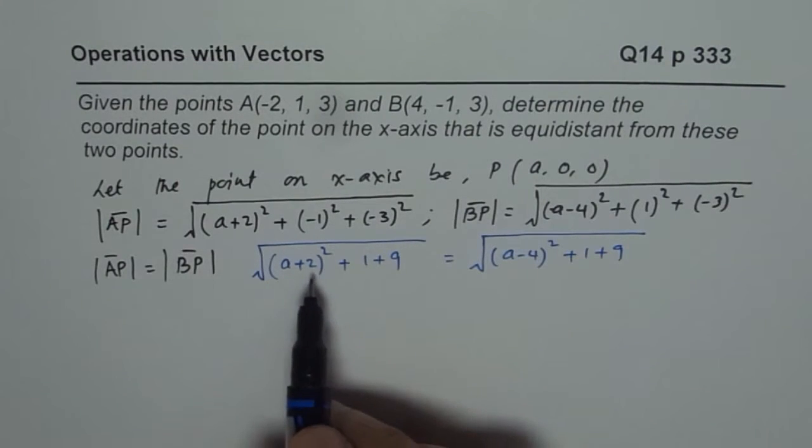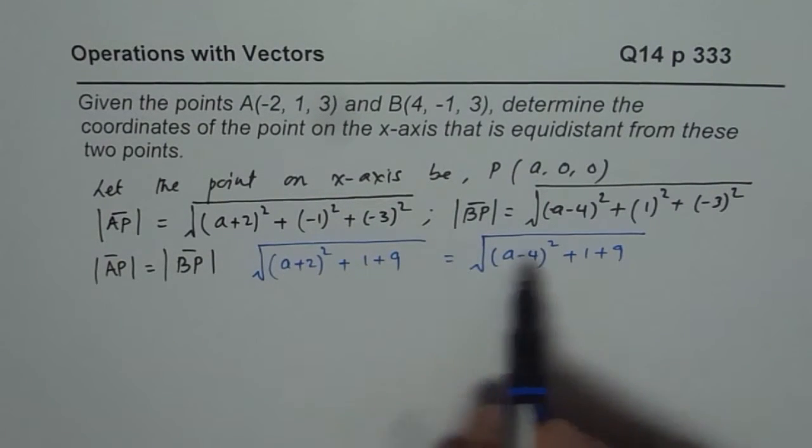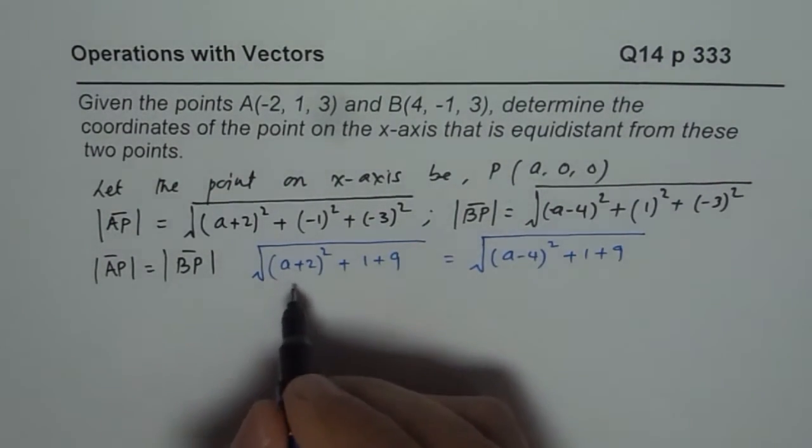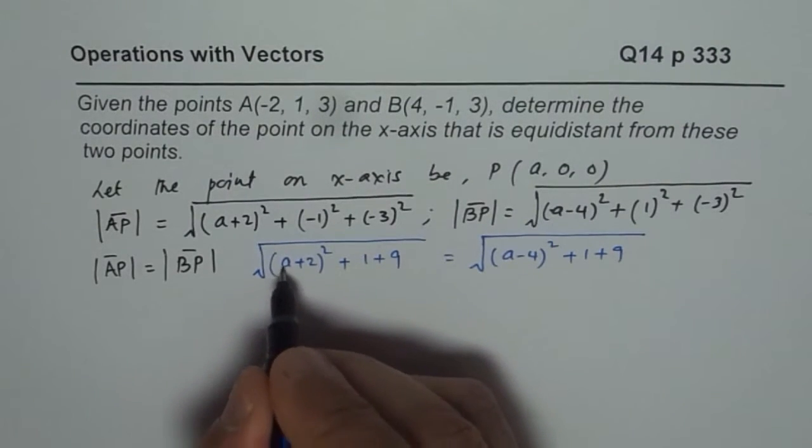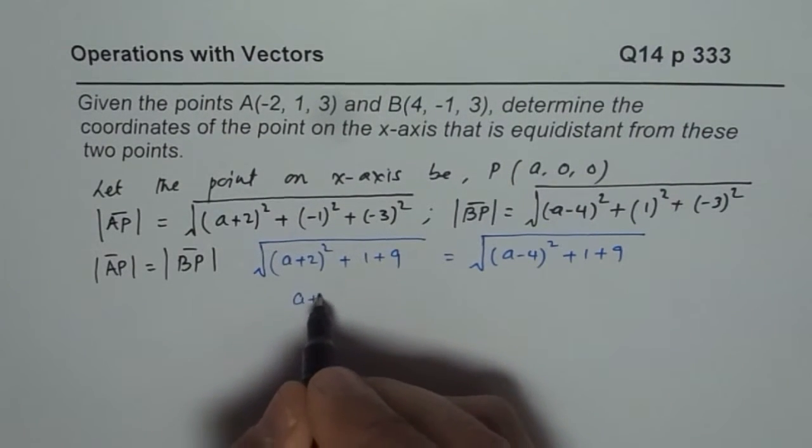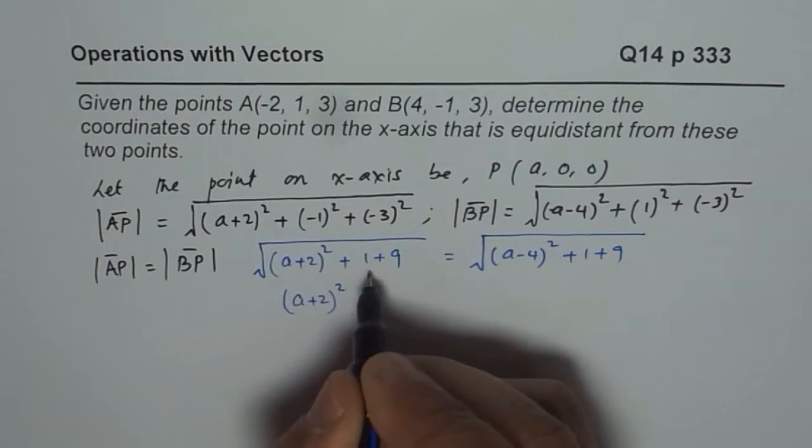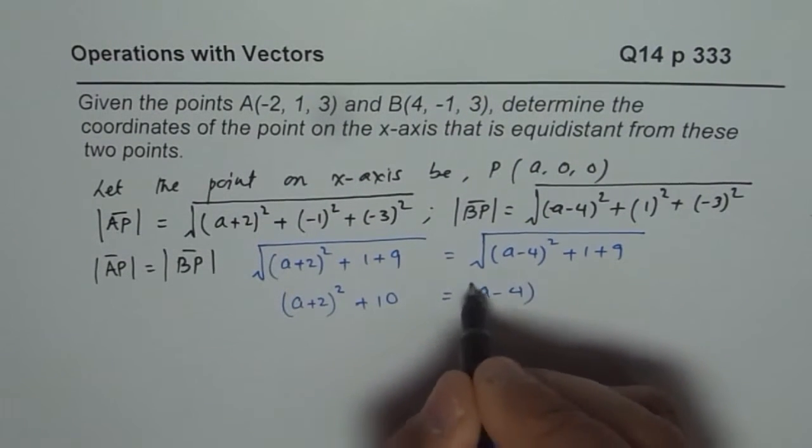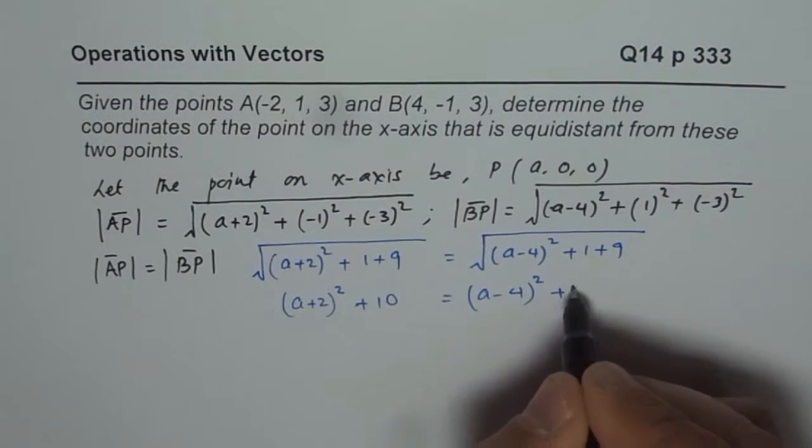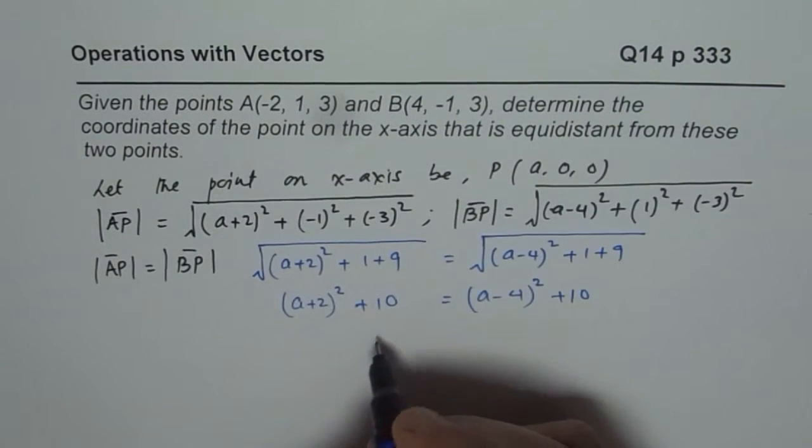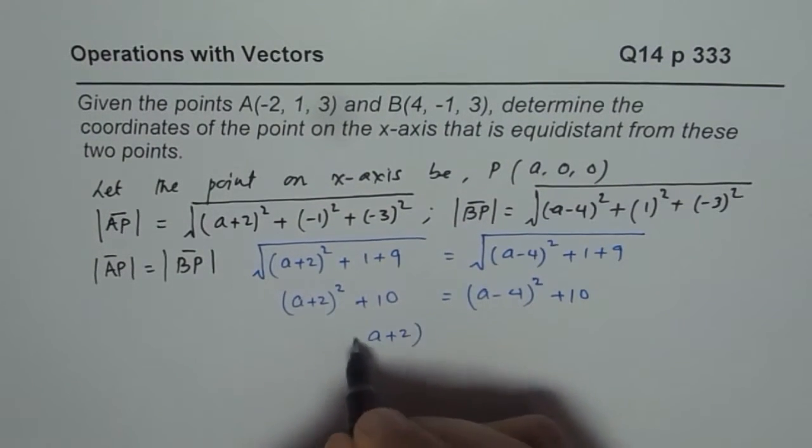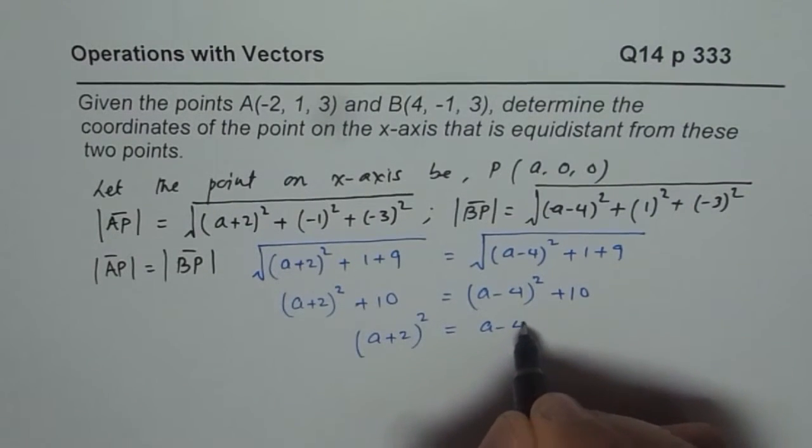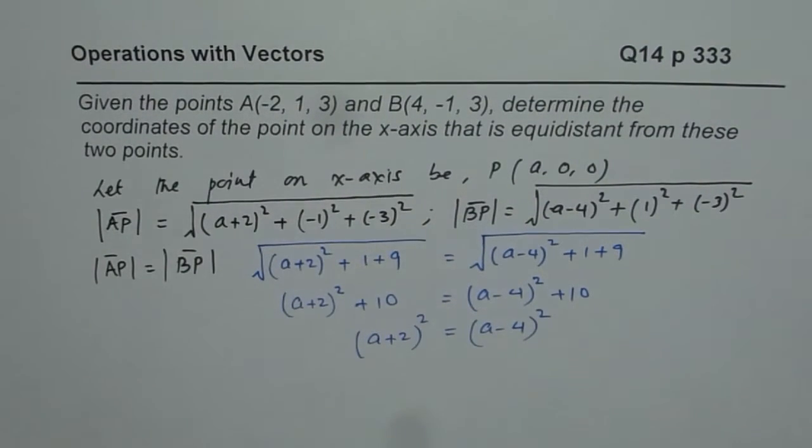Now, to solve further, we can take away square root. Square both sides. So when you square both sides, you get (a + 2)² plus 10 equals to (a - 4)² plus 10. Plus 10 minus 10 cancel, you get (a + 2)² equals to (a - 4)².